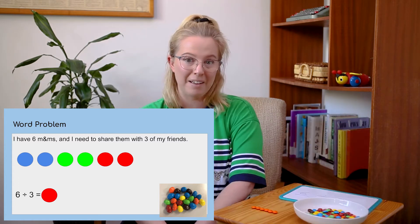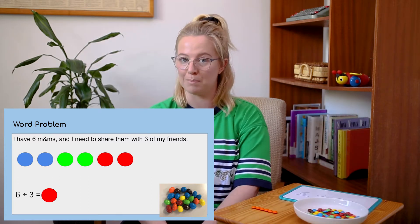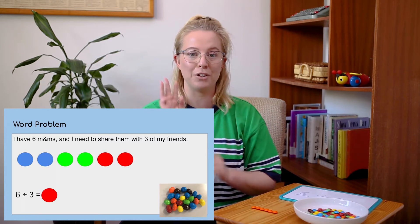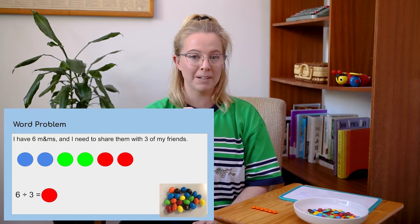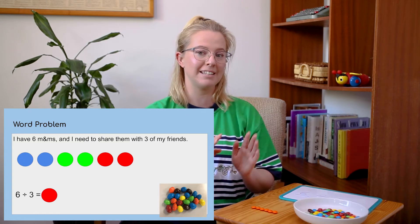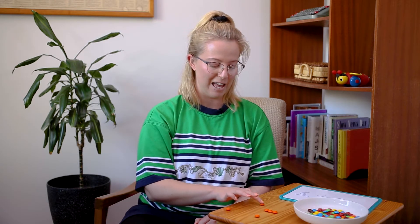Let's have a go. I have six M&Ms altogether and I need to share it between three friends. I'm going to share them out one by one to make sure that each of my friends gets the right, even amount of M&Ms. So let's share it out one at a time — one for the first friend, one for the next friend, and one for the next friend. At the moment they've got one M&M each and I've shared out three altogether.